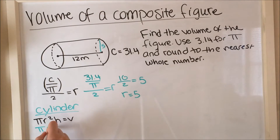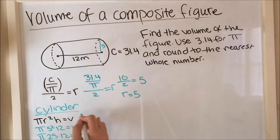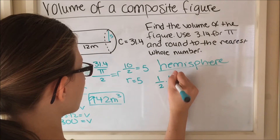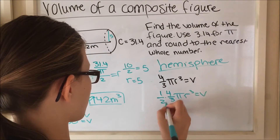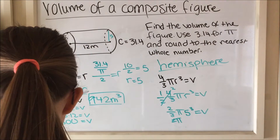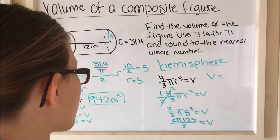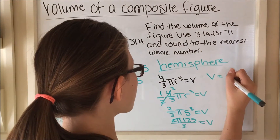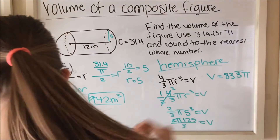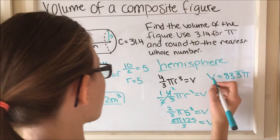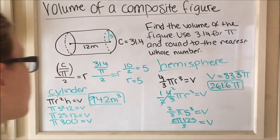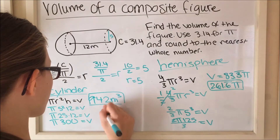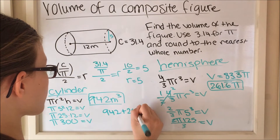To find the volume of the cylinder, plug in 5 and 12: π times 5 squared times 12 equals 942 meters cubed. To find the volume of the hemisphere, we need half the volume of the sphere. Plug in 5 for the radius: 2/3 × π × 5³ = 2 × π × 125 / 3. The volume of the hemisphere is 261.6 repeating meters cubed. Then add the cylinder and hemisphere volumes together.